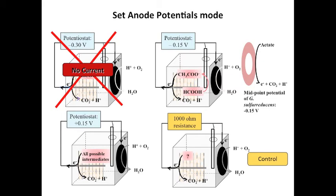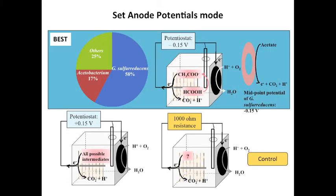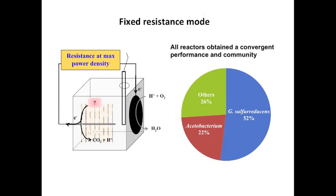Thirty days after inoculation with wastewater, no current was generated at minus 0.3 volts, suggesting a lack of direct formic acid oxidation. More positive potentials — minus 0.15 and positive 0.15 volts — that allowed for acetic acid utilization all produced current, and the best performance was obtained at minus 0.15 volts. The anode community in the minus 0.15 volt reactor was about 60% Geobacter sulfurreducens and about 20% Acetobacterium. Lower proportions of these genera were found in the positive 0.15 volt reactor and the control MFC with 1,000-ohm external resistance. No free acetic acid was detected in any MFCs, suggesting that current generation by Geobacter sulfurreducens was dependent on acetic acid production by Acetobacterium.